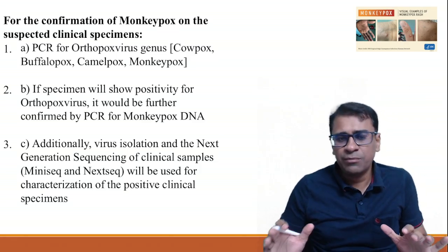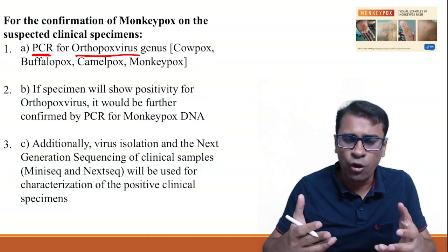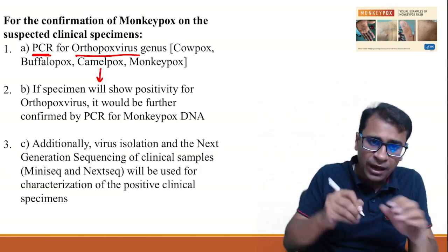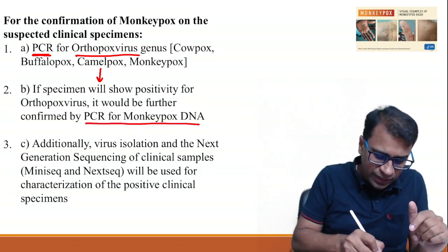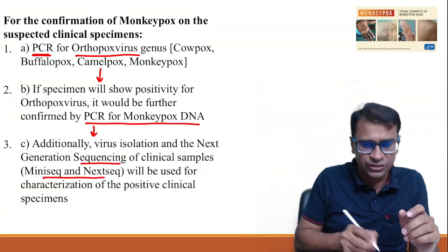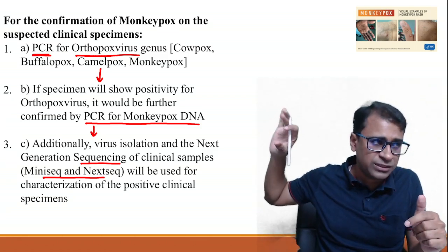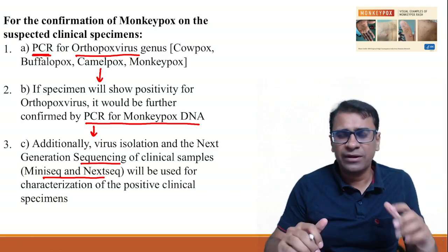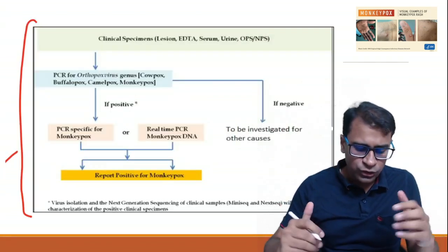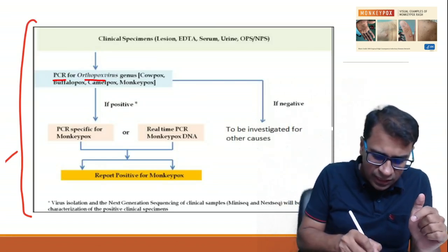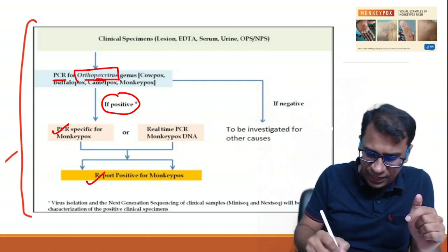For a confirmed case, first run a PCR for orthopoxvirus. If that sample tests positive, then run a confirmation PCR specifically for monkeypox DNA. Finally, confirmation can be done by gene sequencing — next-generation sequencing or Metagenomics sequencing. If the orthopoxvirus PCR is negative, investigate for other causes. Currently, since cases are very few, this testing is done only by the National Institute of Virology, NIV Pune.